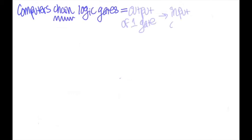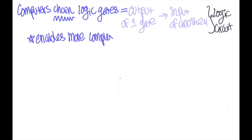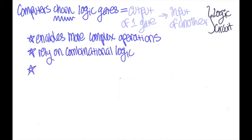Likewise, computers often chain logic gates together by taking the output from one gate and using it as an input to another gate. We call that a logic circuit. Circuits enable computers to do more complex operations than they could accomplish with just a single gate. These logic circuits rely on combinational logic to reach their outputs.